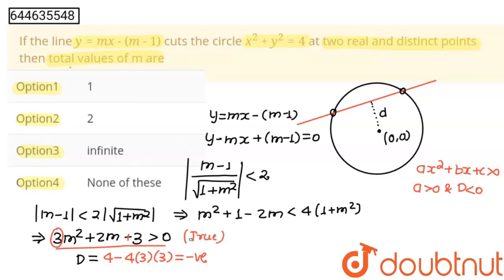Since this quadratic expression is always positive, this inequality is always true, and this equation represents the condition for the chord. It means that for any value of m, this line will always be a chord. So there are infinite solutions for m. Thank you, students.